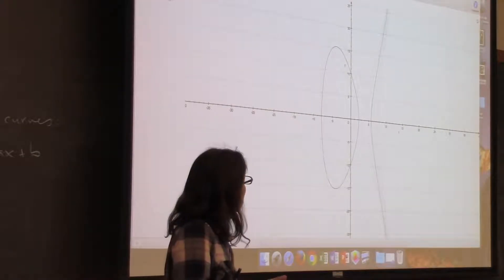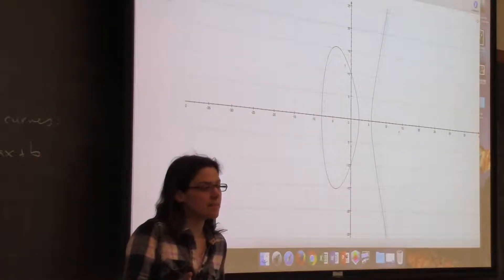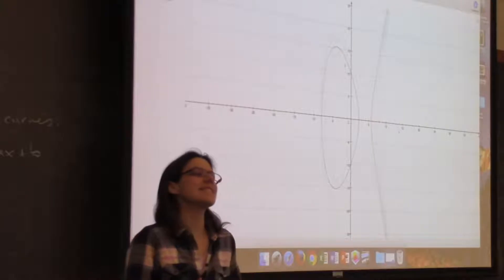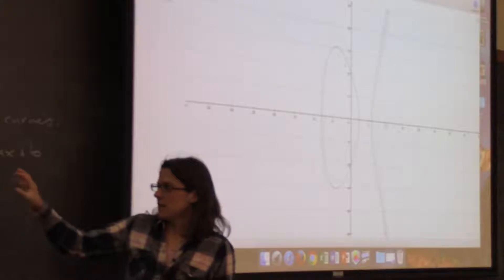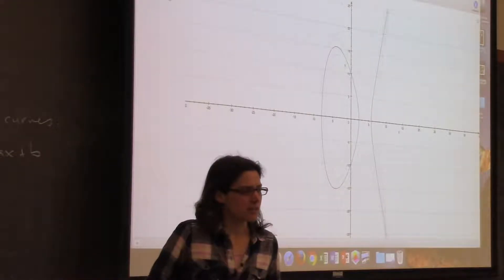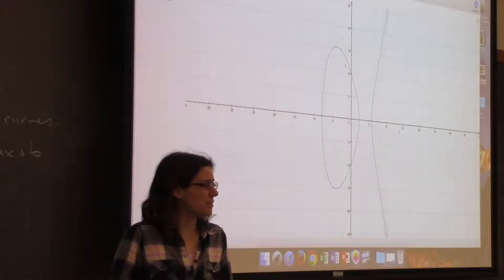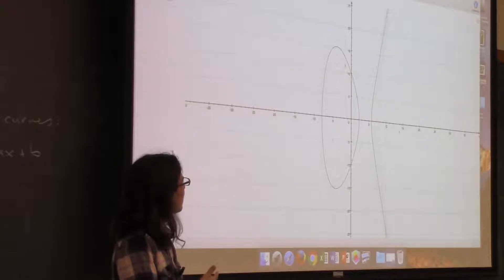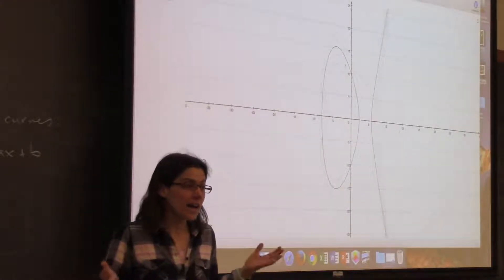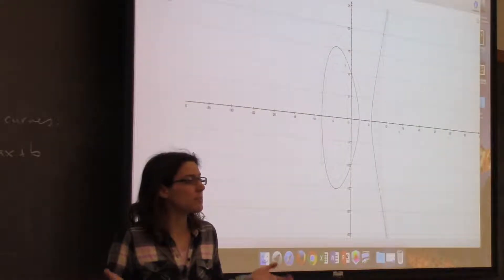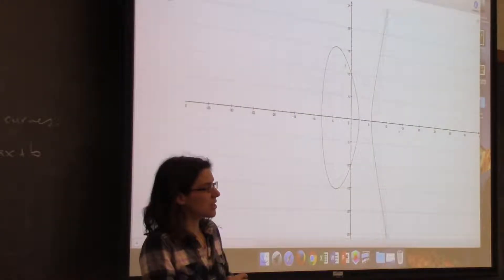Number theorists studied elliptic curves for a long time. This is one of those things where people studied it because it was pure math and it was cool. Even in 1997 or '98 when Gwen got her PhD doing elliptic curves, you could have asked, 'who cares about elliptic curves?' And she would have said, 'because they're really neat and they're really beautiful.' But there weren't obvious applications — until around that time or a little later, people realized you could use them for cryptography. So there's some way you can use elliptic curves to encrypt things. Very cool.